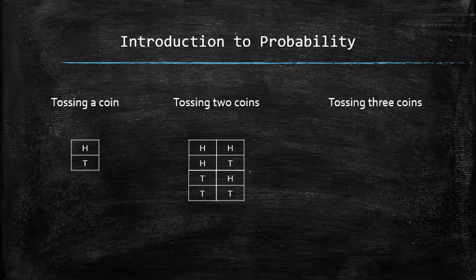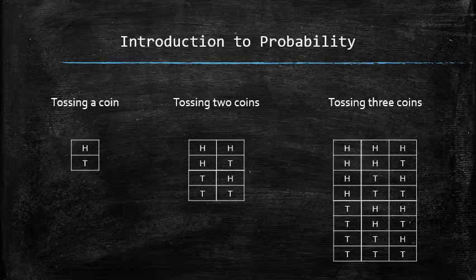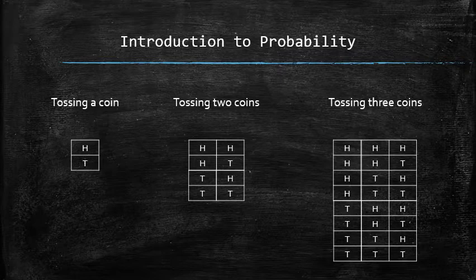When tossing three coins, we can get for the first two tosses the same pattern as we just listed for tossing two coins. But now this pattern can be combined with either heads or tails of the third toss. So this is the sample space for tossing three coins.